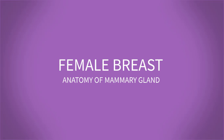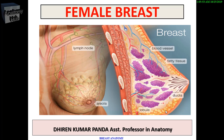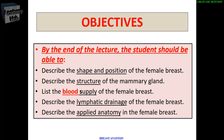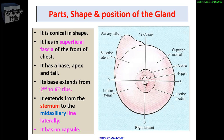Today we are going to study the most important topic — the female breast, or mammary gland. The breast or mammary gland is an accessory organ of the reproductive system and is more important in the female. In gross anatomy, we will study the shape, position, structure, blood supply, lymphatic drainage, and applied anatomy.